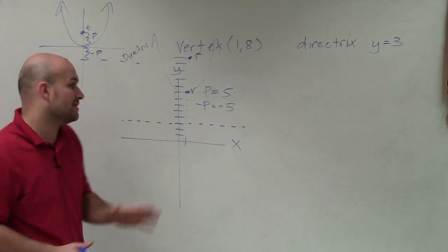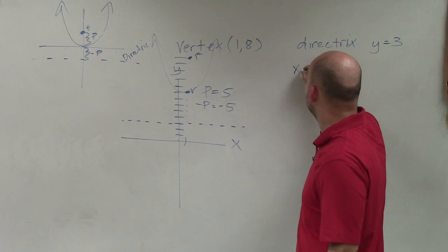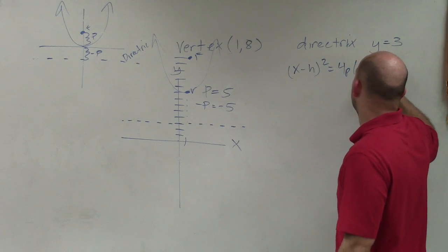So now let's take this standard equation. So I have a vertical axis of symmetry. So therefore, my equation is going to take the form (x - h)² = 4p(y - k).